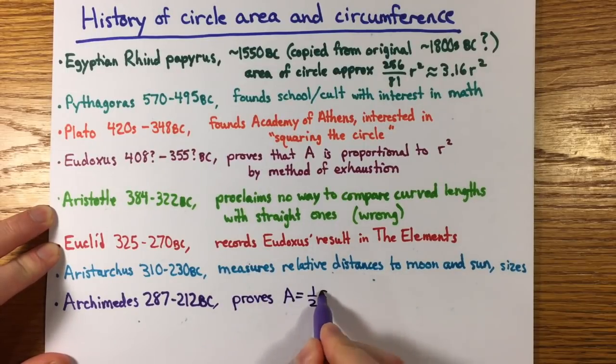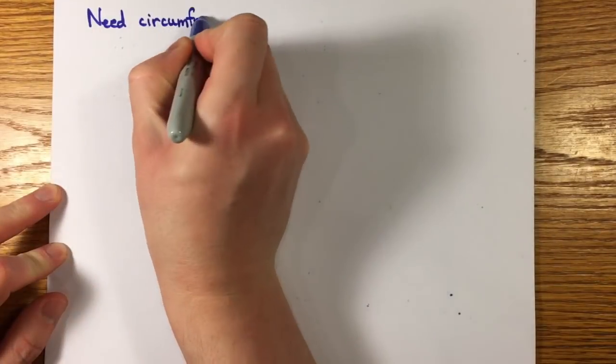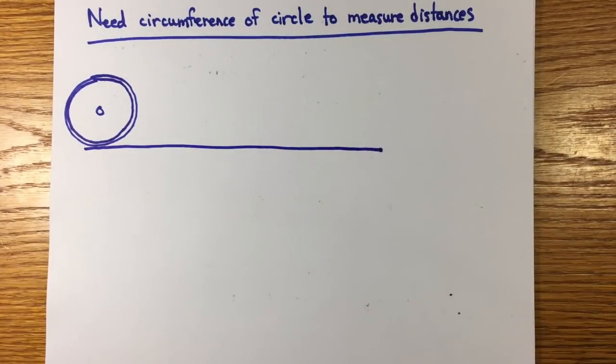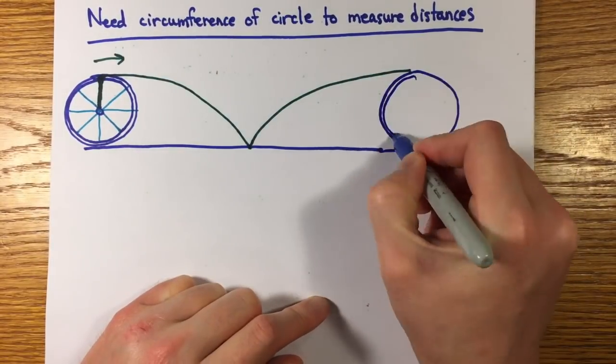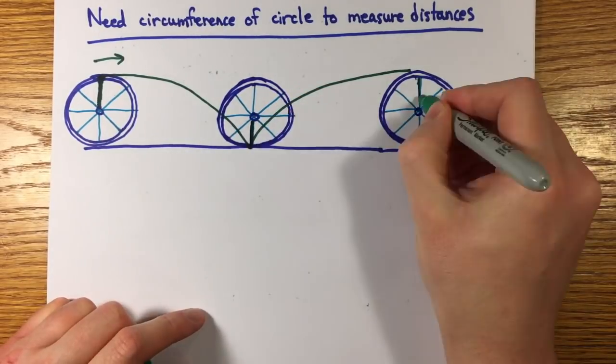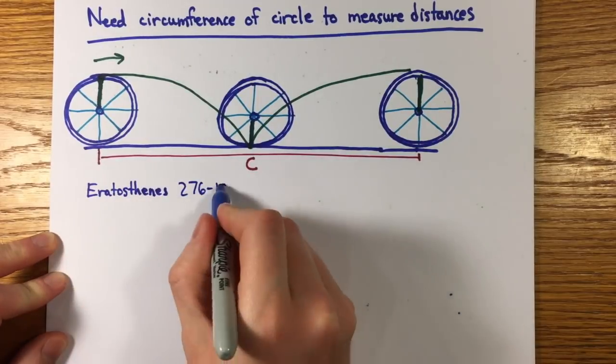Now I'll say Aristotle found the problem of arc length so vexing, so confounding, that he declared there was simply no way to compare lengths of curved lines to the lengths of straight lines. Well, that's the kind of wrong statement only a philosopher can make. In the real world, Aristotle's own pupil Alexander conquered so much territory that long distances between his cities had to be measured accurately with early odometers.